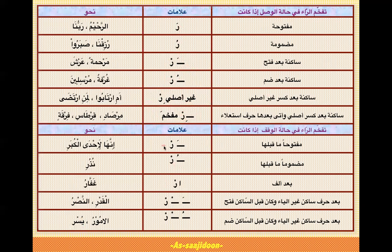وقفاً مزید: Ra ساکن سے پہلے فتح یا ضمہ — same condition آگی۔ Ra ساکن سے پہلے الف آئے تو موٹا ہوگا۔ Ra ساکن سے پہلے یا کے علاوہ کوئی ساکن حرف ہو تو پیچھے جا کر دیکھیں — اگر زبر یا پیش آ رہی ہے تو Ra موٹا کریں۔ یہ conditions انشاءاللہ practice کرتے جائیں تو آسانی ہوتی جائے گی۔